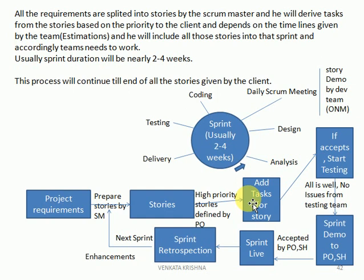Once tasks are added to a story, the development team will give a story demo — also called an ONM (over-net meeting). The development team gives this demo to the testing team because if the story is not working and the testing team accepts it anyway, we lose time. So for each and every story, the development team gives a demo to the testing team, and we need to accept it before we continue with further testing on that story.